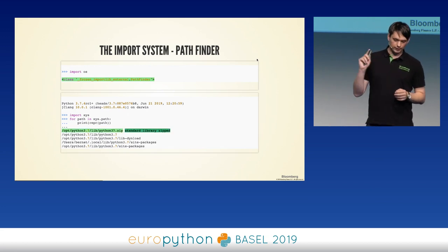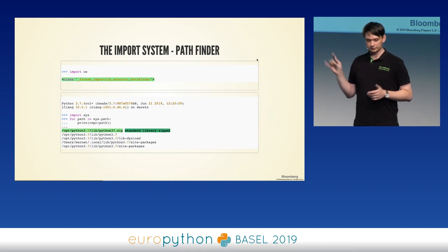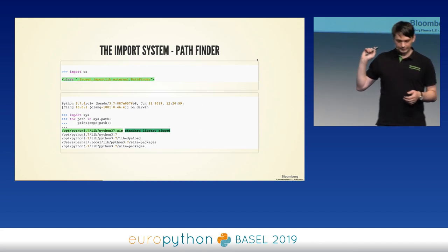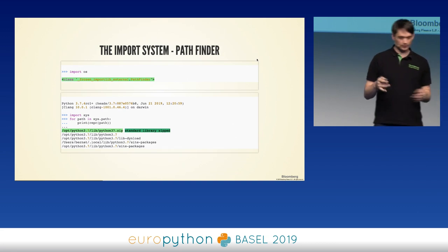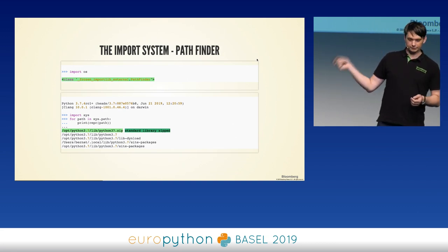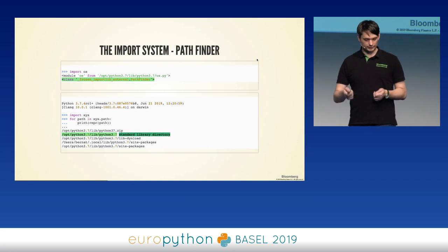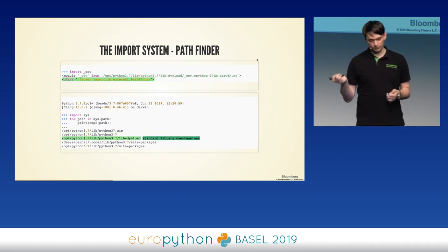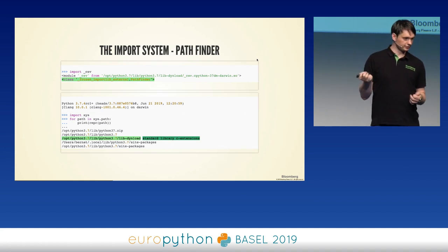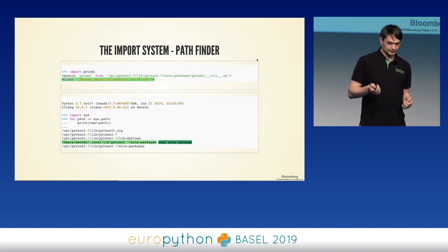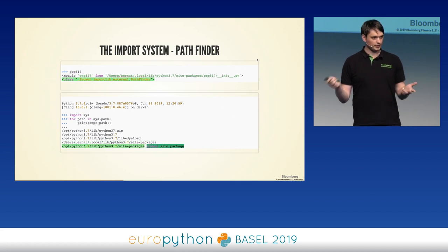There can be multiple elements in sys.path. On a MacBook, for example, you can see one entry is a zip file — we can even import from zips. Then it looks in the standard library directory, then lib-dynload which stores C extensions for the standard library, then user site packages, then global site packages.